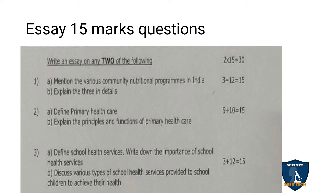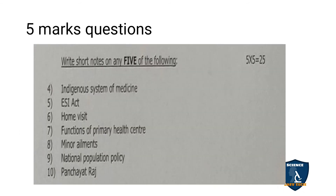Totally there are 3 questions; out of that, you have to write 2. Moving on to 5-mark questions — that is short notes. Out of 7 questions, you have to answer any 5. Under that: 4th question — indigenous system of medicine; 5th question — ESI Act; 6th question — home visit; 7th question — functions of primary health center; 8th question — minor ailments; 9th question — national population policy; 10th question — panchayat raj. Out of these 7 questions, you have to answer any 5. So, 5 into 5 equals 25 marks.